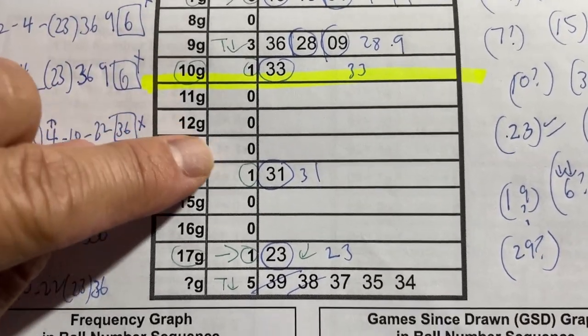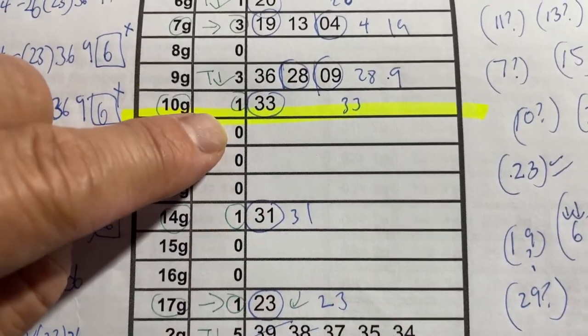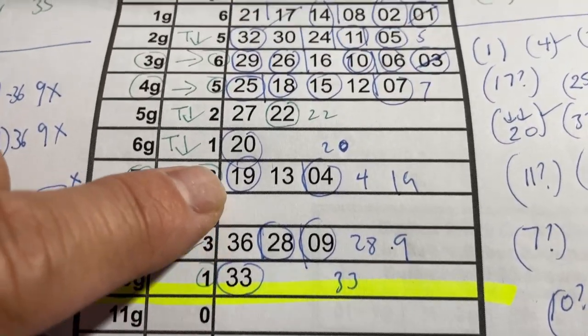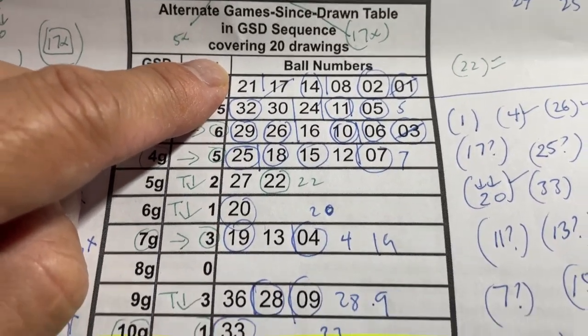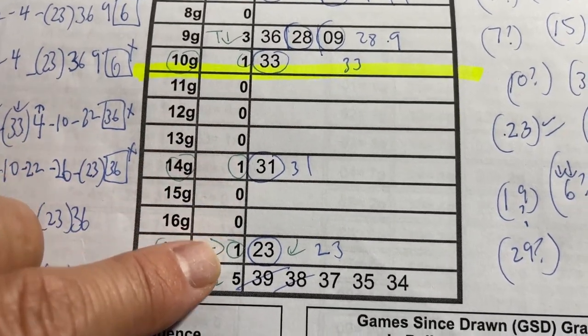Anything below this yellow line are cold numbers, and anything above it are warm to hot numbers. I usually choose at least one cold number.